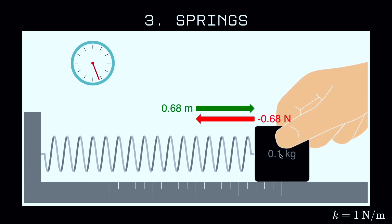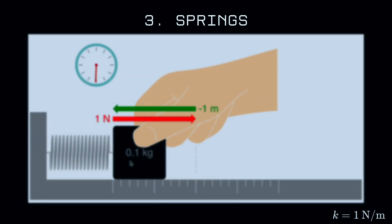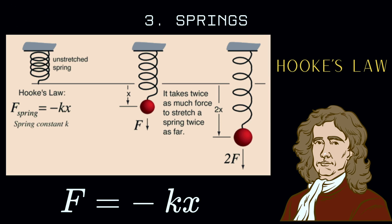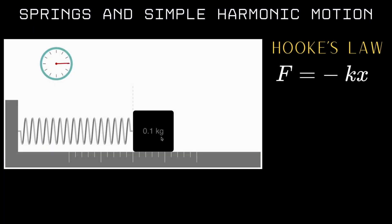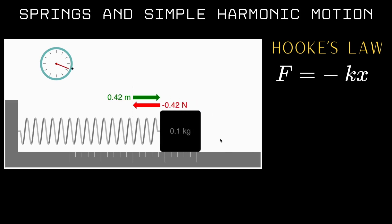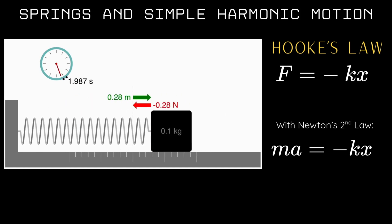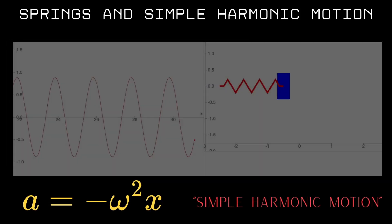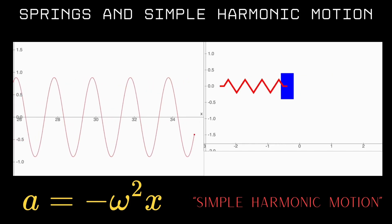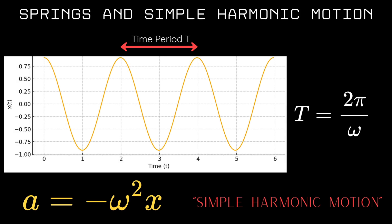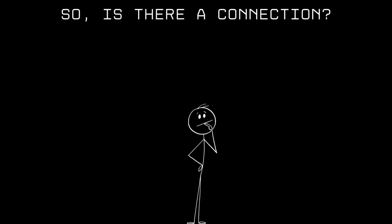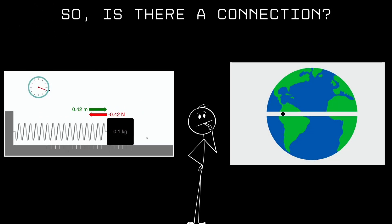Fact number three: springs. The more you stretch or compress a spring, the harder it pushes back. This is Hooke's law: F equals minus kx. The force is always directed back towards the equilibrium point, proportional to how far you are from it. Stretch it more, it pulls back harder; push it in, it pushes back. If you have a force like that, you get simple harmonic motion — back and forth in a sinusoidal pattern. Using F equals ma and plugging in Hooke's law gives acceleration equal to negative omega-squared times x, where omega is the angular frequency. The period of oscillation is given by 2π over omega.